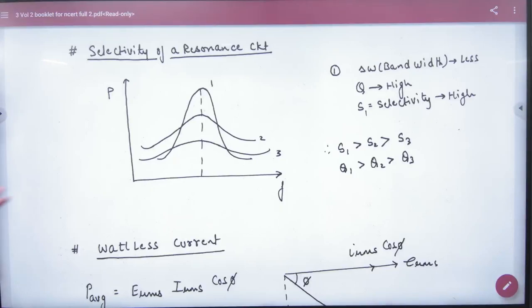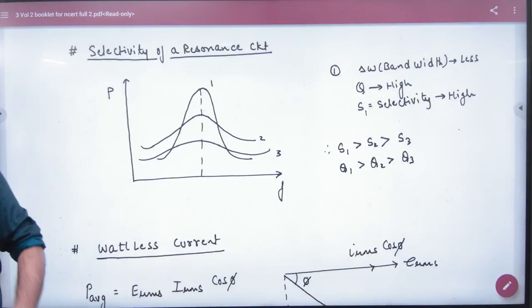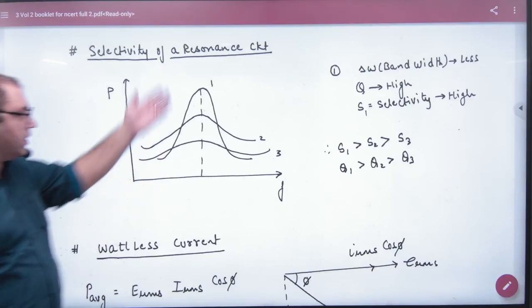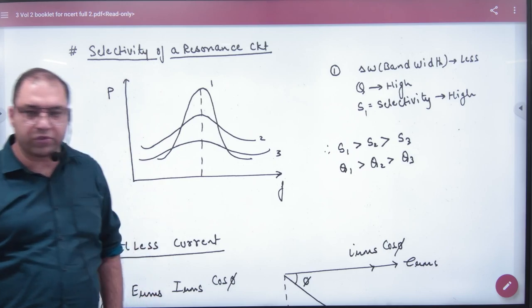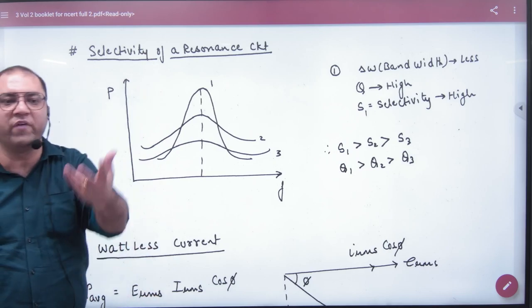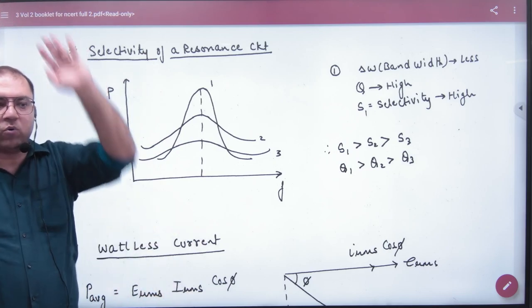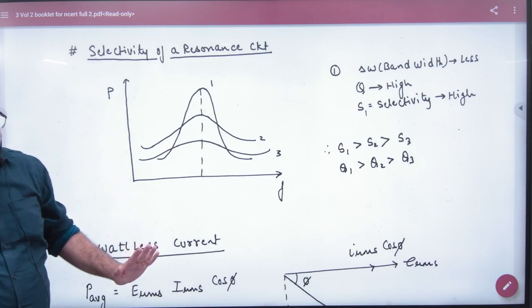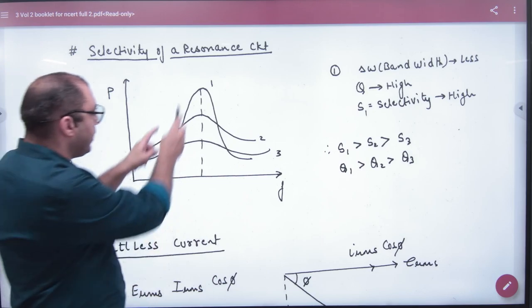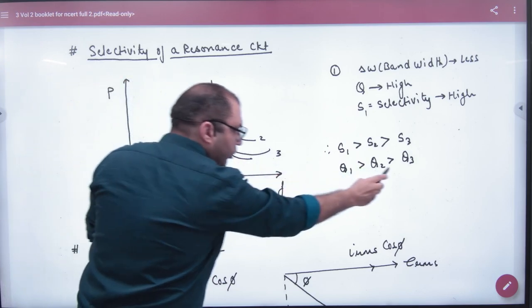Next is Selectivity of a Resonance Circuit. There are three signals. The question is to know which Q value is higher, which peak is higher, which quality is higher. Q1 is greater than Q2 is greater than Q3.